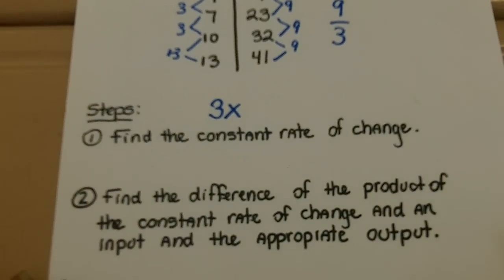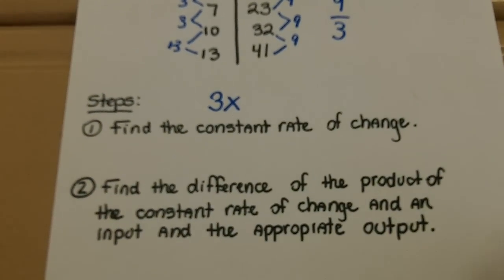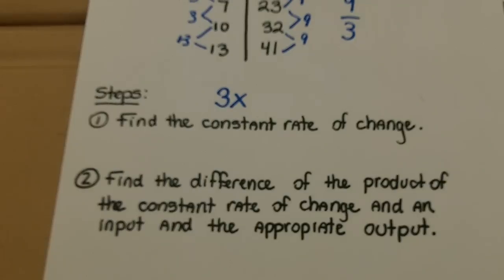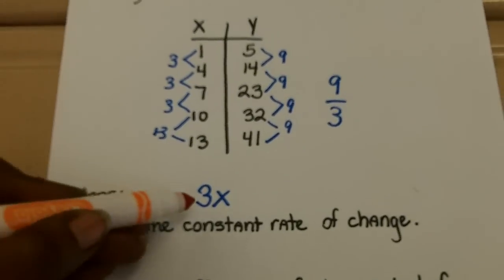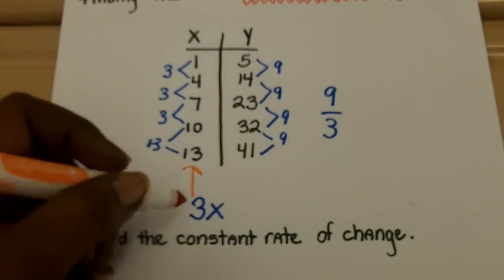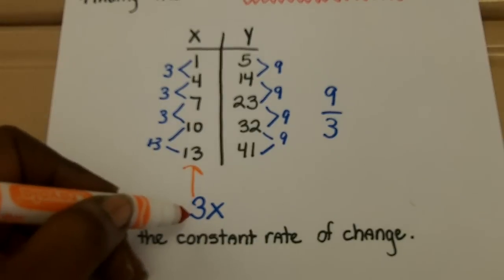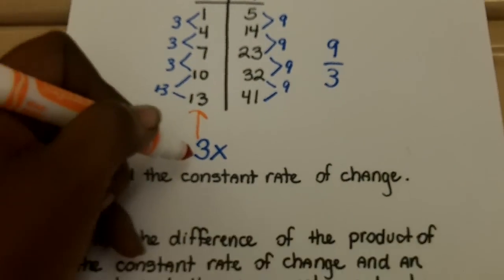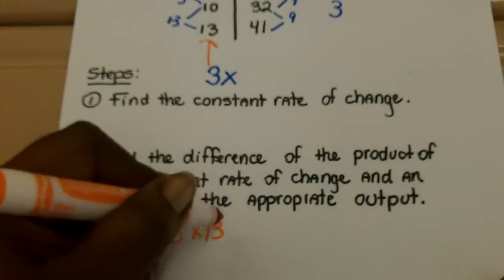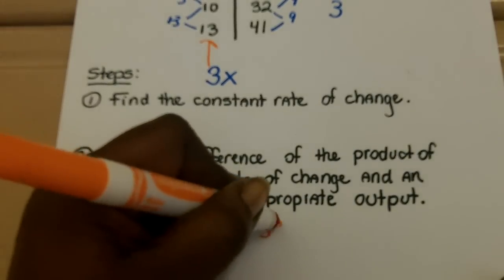Now, step 2. It's going to sound a little tricky, but really it's not. It says to find the difference of the product of the constant rate of change, which was 3, and an input, and the appropriate output. So, let me show you what that means, for example. We found that the constant rate of change was, in fact, 3. So, what I'm going to do, I'm just going to pick the last one here. x is 13. So, what I'm going to do is find the product of the constant rate of change in this input. So, in other words, I'm going to come down here and do 3 times the input of 13. Well, 3 times 13 is 39.